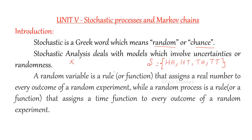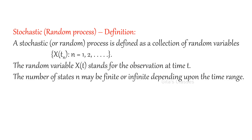Generally, stochastic processes deal with X of T only. We are assigning some function of T. Depending on the time, it may change — then it is called the random process. So, a random variable is a rule or function that assigns a real number to every outcome of a random experiment. While a random process is a rule or function that assigns a time function to every outcome of a random experiment. By mathematical definition, a stochastic process is defined as a collection of random variables — a sequence of random variables.